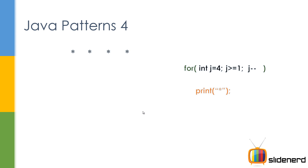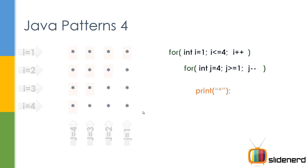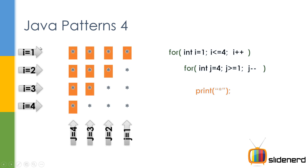Now I want 4 such rows, so I'm gonna put another for loop. I'll say: for i = 1; i less than 4; i plus plus. This is gonna print a total of 16 stars with a new line at the end. Observe: i is 1, i is 2, i is 3, i is 4.